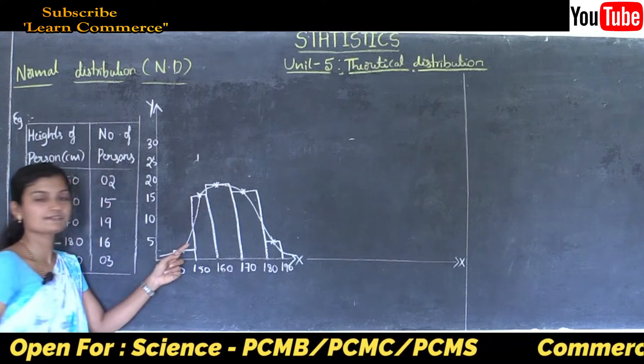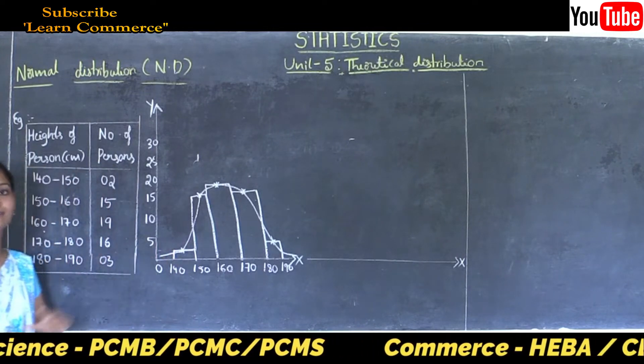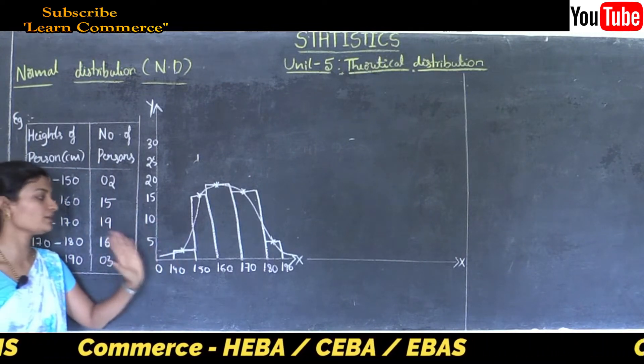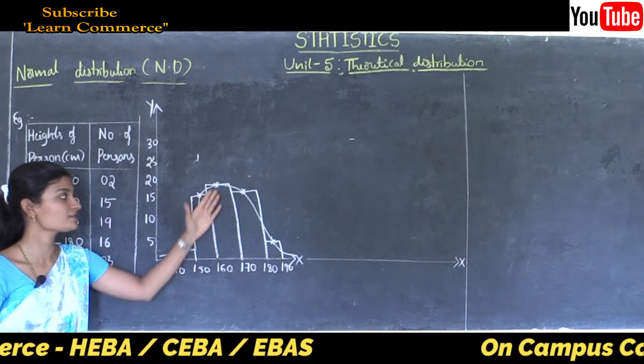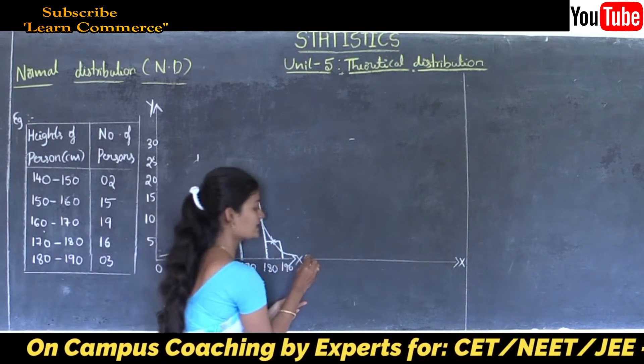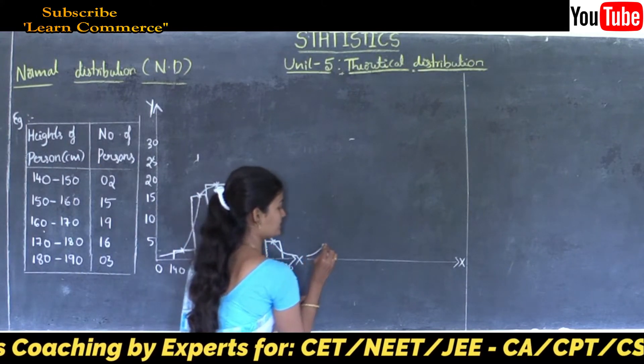This smooth curve is called the frequency curve. Now, setting aside the histogram, let's talk about the normal curve. The normal curve is bell-shaped.